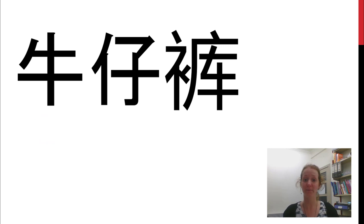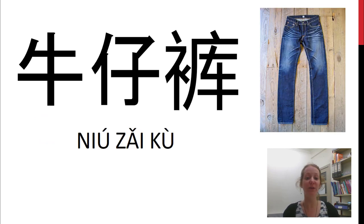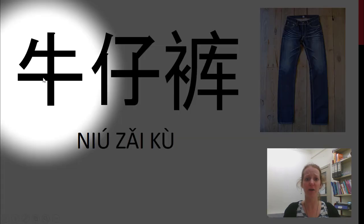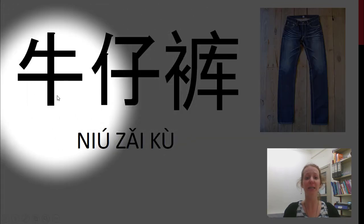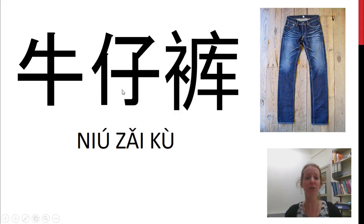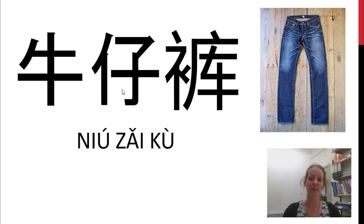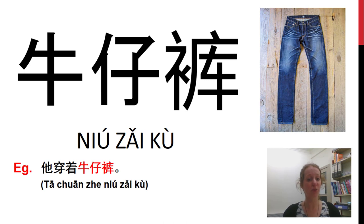这是什么? 牛仔裤. Literally, 牛 you might have noticed means cow, and 牛仔 is a cowboy. So 牛仔裤 — cowboy pants — but we know them as jeans. 他穿着牛仔裤. He is wearing jeans.